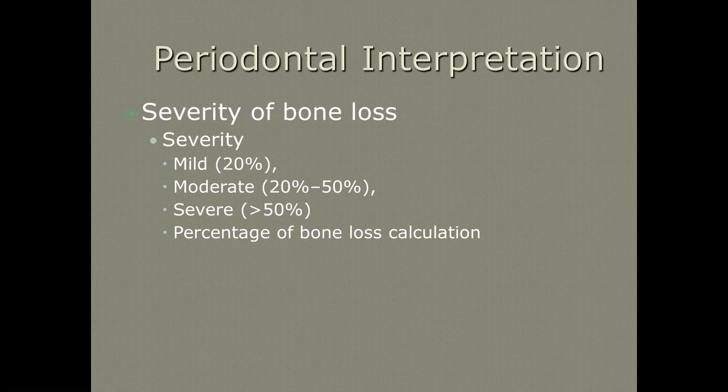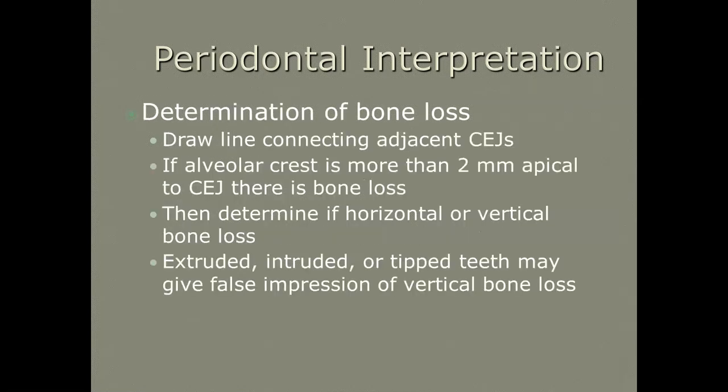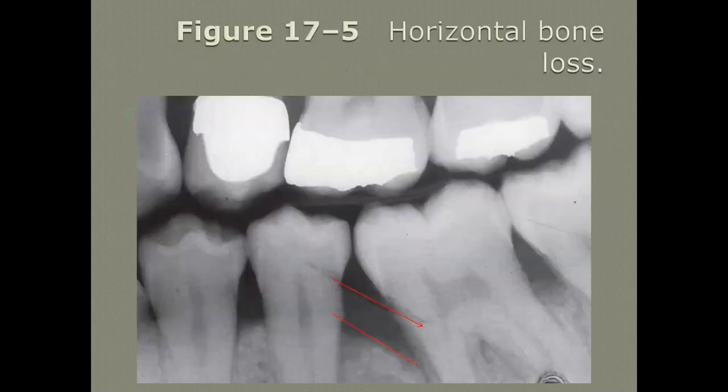We have what we call blended periodontal diagnoses — the patient could be generalized in one area and have something else localized. We want to be as specific as possible when defining our patient's periodontal status. For the type of bone loss, you're drawing connecting lines from CEJ to CEJ — if the alveolar crest is more than two millimeters apical to the CEJ, there's bone loss.